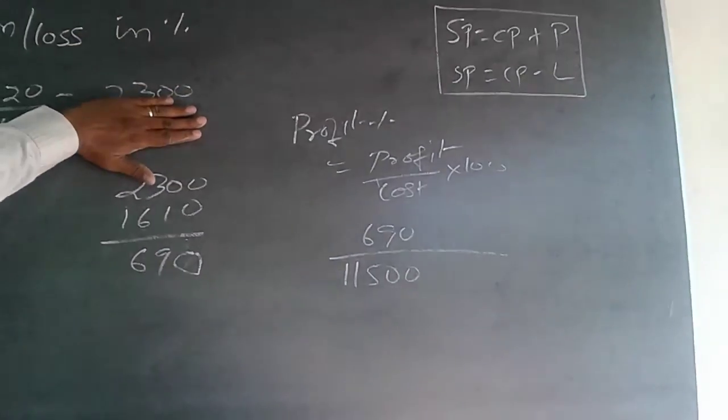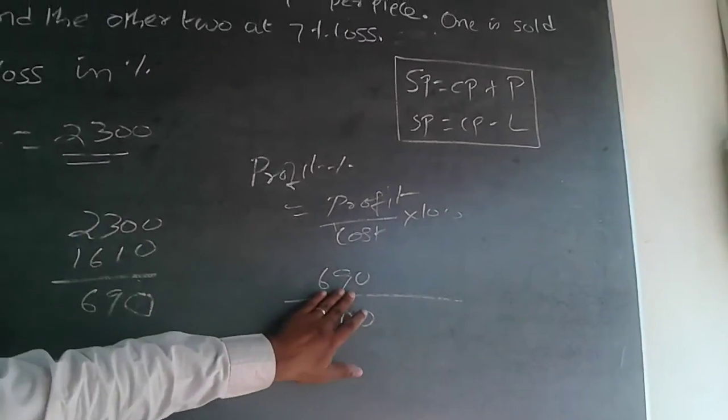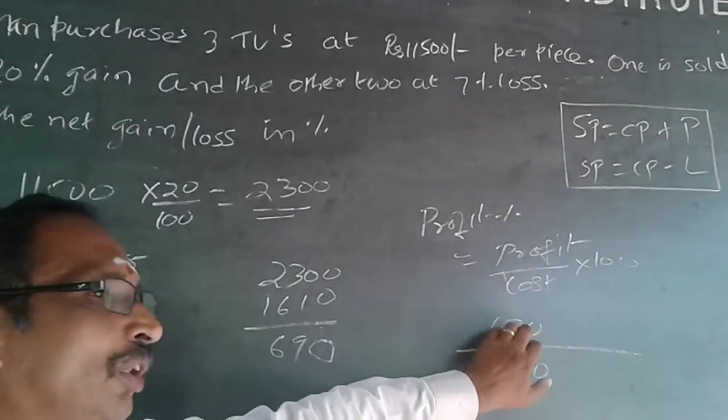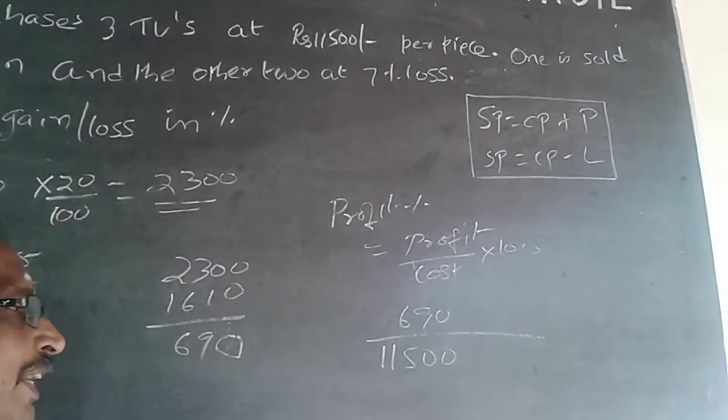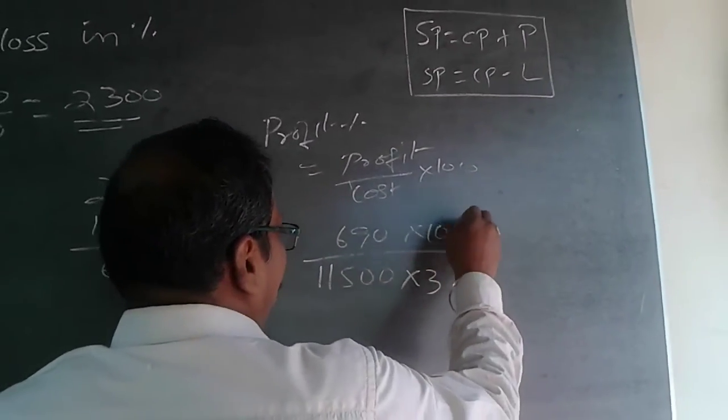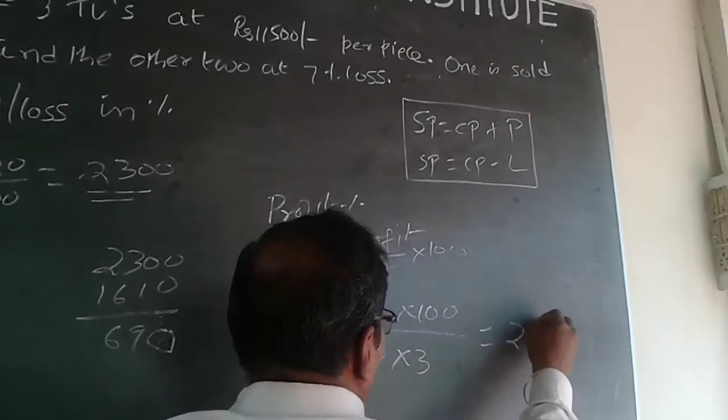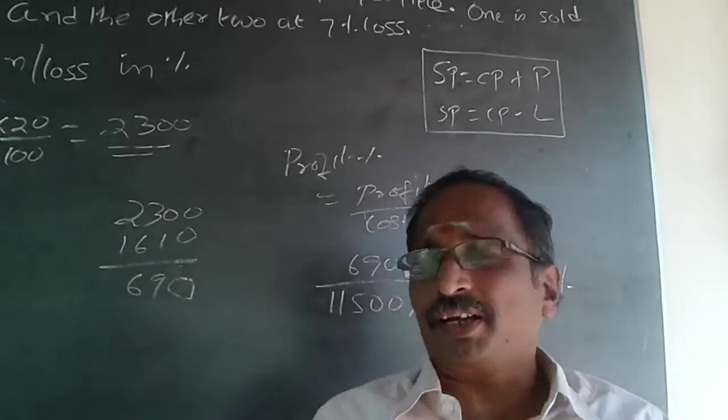On one is making a profit at 2,300. Other two is making a loss at 1,610. So, the gain is 690. This is for all the three TVs put together. So, you will have to take the cost of all the three TVs put together into 3. When you work it out, this will be equal to 2%. The answer is 2%. This is the way of doing it.